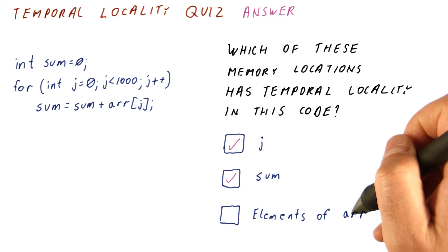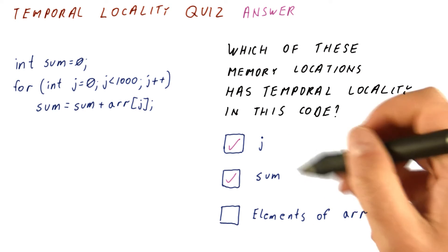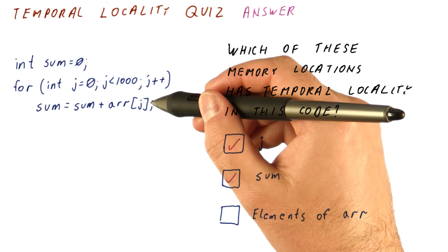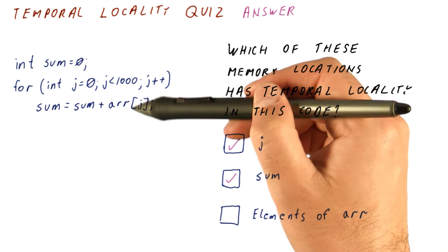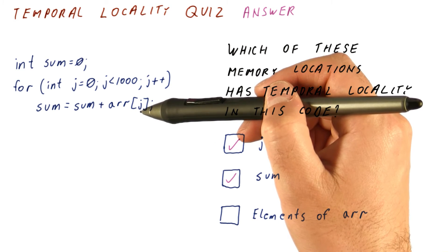For each element of the array arr, however, and note that the array has many, many memory locations, we do not have temporal locality. Element arr[0], once it's accessed in the loop, that's the only time we access it in this loop.